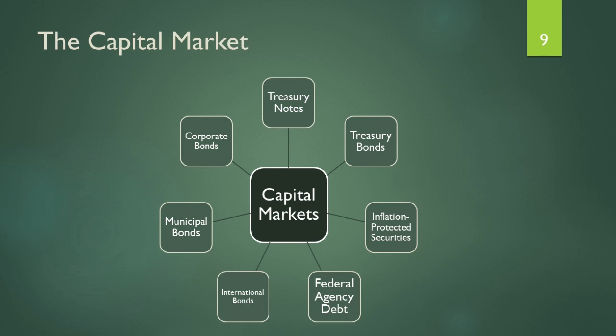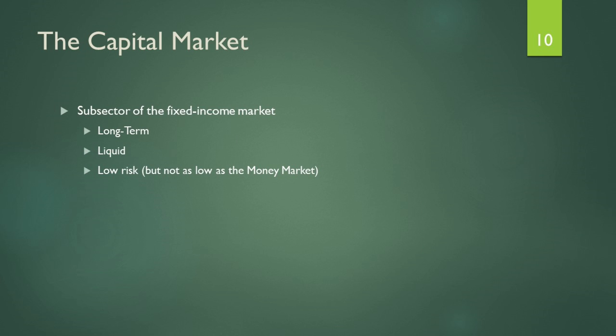Now we move on to the capital market — the longer-term cousin of the money market. It covers maturities of one year and above. This is also a liquid and low-risk market, but not as low risk as the money market. In money market instruments, you are essentially getting instruments very close to cash, almost immediately convertible. But in the capital market, it takes a tiny bit longer. One of the most common examples would be treasury notes and bonds.